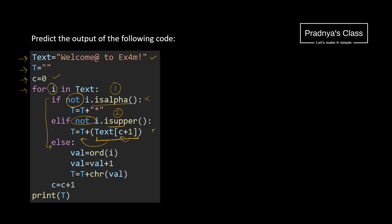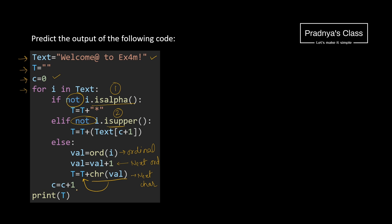If these two conditions are false, we will come to the else part. Using the ord function we are getting the ordinal value of the character, then adding 1 to it — meaning we will get the next ordinal value. On that next ordinal value we apply the chr function, so we get the next character according to the ordinal value, and that character gets concatenated to the previous string. After every iteration the value of C will get incremented by 1. Now let's draw the dry run table and check out the values in each pass.